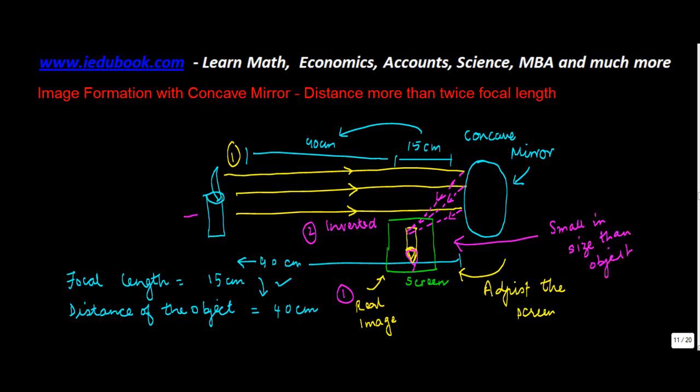So let's say if this is 20 cm, then this is going to be 16 cm, 14 cm, whatever. But this is going to be definitely less than 20 cm. So these are the properties when you form an image with concave mirror when the distance is more than twice the focal length.